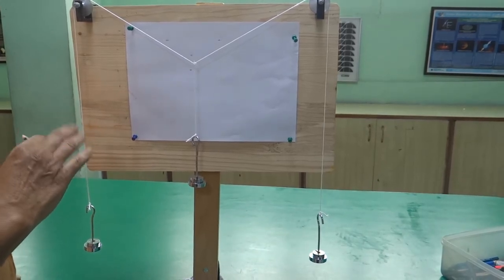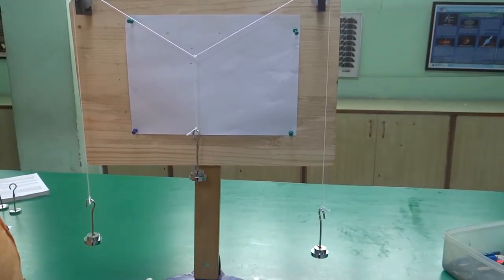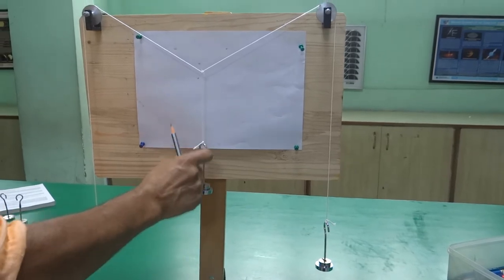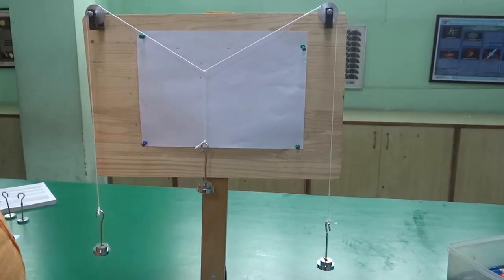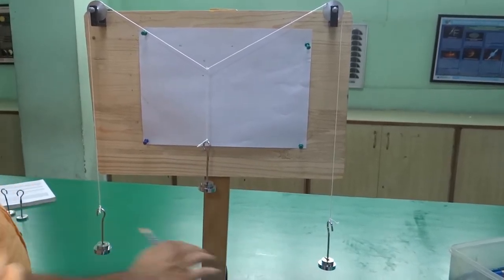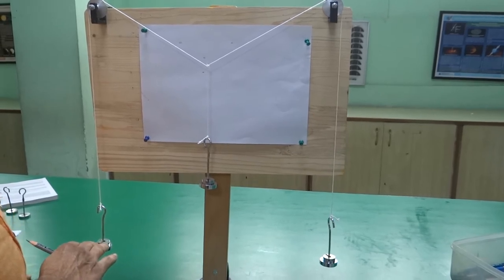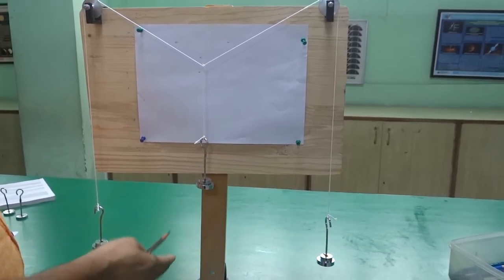Instead of this known weight at the center, you can suspend that block whose weight is unknown. Keep these 2 points at the same level. Place the same weight. Check the equilibrium.